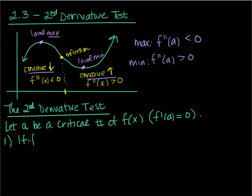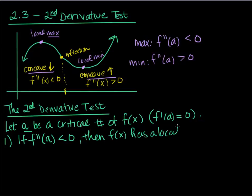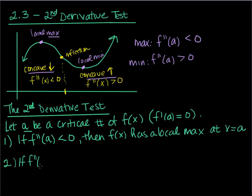Number one: if f double prime evaluated at a is less than zero, then f of x has a local maximum at a. Remember, that doesn't tell you what the actual maximum value is — we have to plug that into the function to determine that. Likewise, this being less than zero means I'm concave down, which makes sense — that's why I have a max. If the second derivative evaluated at a is greater than zero, then we have a minimum.